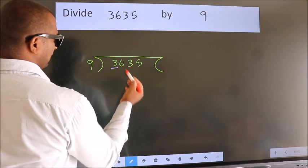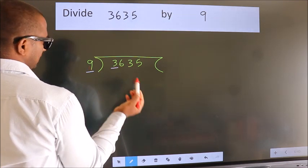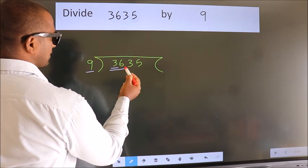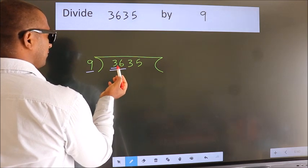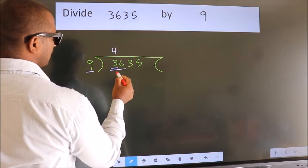Here we have 3. Here 9. 3 smaller than 9. So we should take 2 numbers, 36. When do we get 36? In 9 table. 9 fours 36.